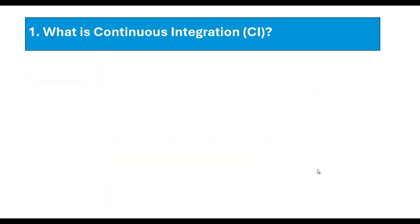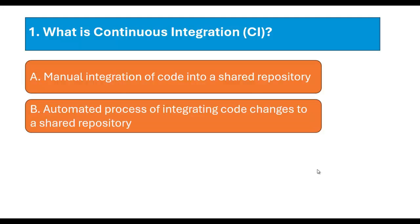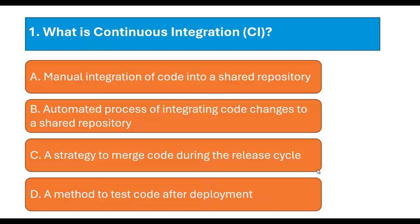Question number one: What is continuous integration? Option A: Manual integration of code into a shared repository. Option B: Automated process of integrating code changes to a shared repository. Option C: A strategy to merge code during the release cycle. And Option D: A method to test code after deployment. Please pause the video at this point and try to answer the question.